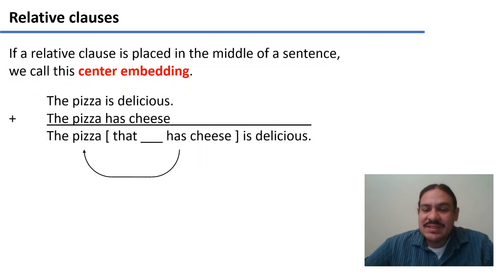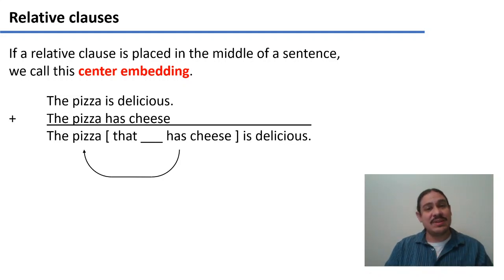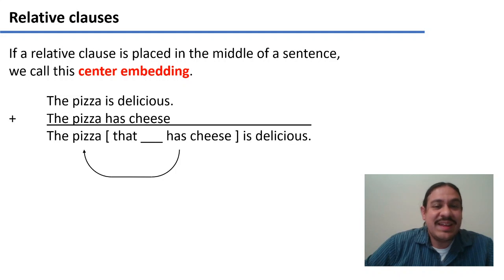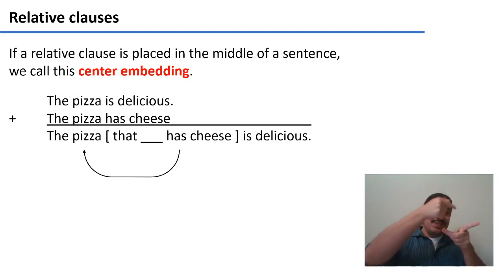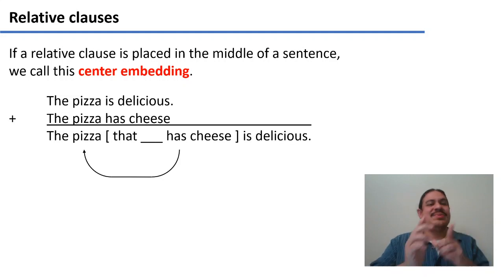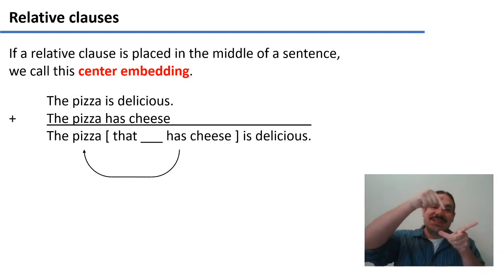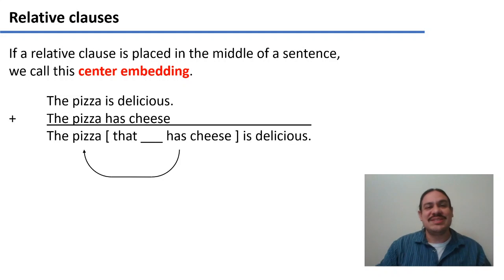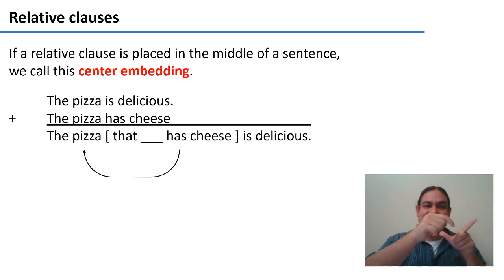When we had our first English sentence, the relative clause was at the end. In Spanish, the relative clause was in the middle. The equivalent in English is 'The pizza that has cheese is delicious.' Here, 'the pizza is delicious' is the main clause, and the relative clause is in the center — it breaks up the main clause. We call this kind of configuration center embedding, because the relative clause is in the center of the main clause.